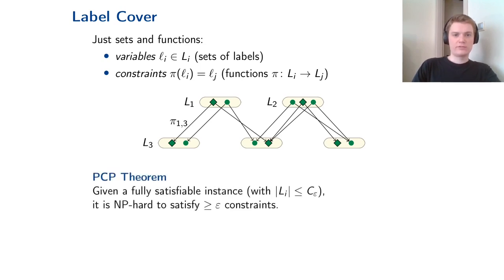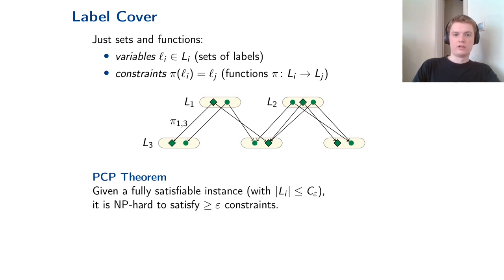One version of the PCP theorem says that given a fully satisfiable instance of label cover, it is NP-hard to satisfy even a small constant fraction of constraints. For every ε, you can fix the label set size to a constant and it is NP-hard to distinguish fully satisfiable instances from those where not even a small fraction is satisfied.